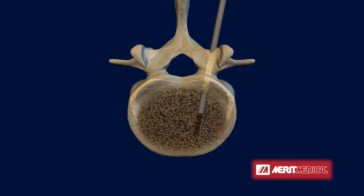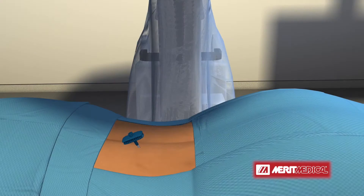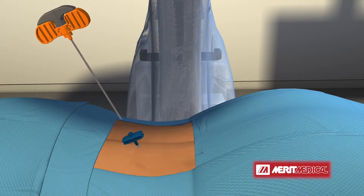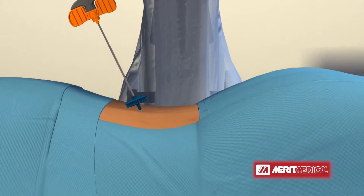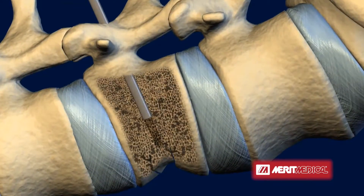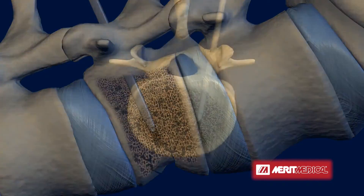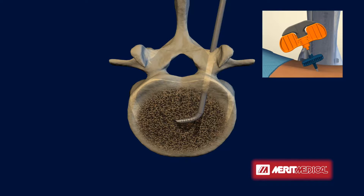The osteotome may also be used to collect a biopsy specimen. The navigational midline osteotome is then used to create preferential pathways for the ultra-high viscosity Stability bone cement to flow within the vertebral body.